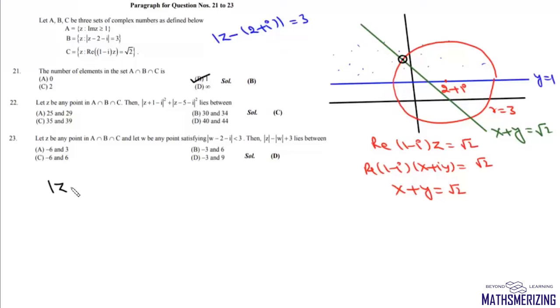So it is distance between z minus minus 1 plus iota whole square and plus this is z minus 5 plus iota whole square. Now this is 2 plus iota and radius is 3 units. So this point will be minus 1 plus iota and this other point will be simply 5 plus iota.